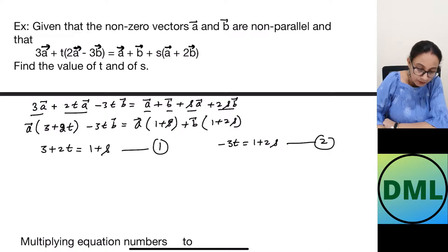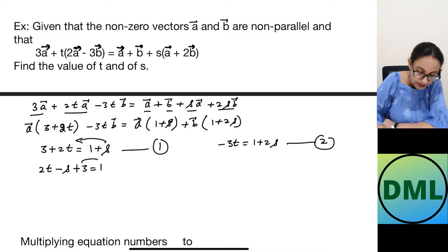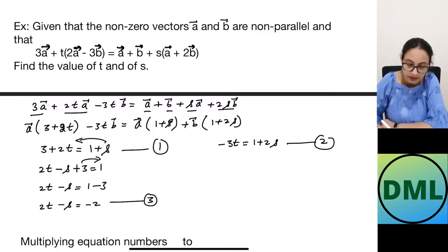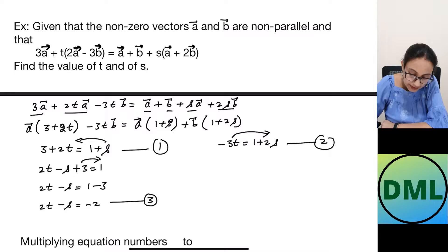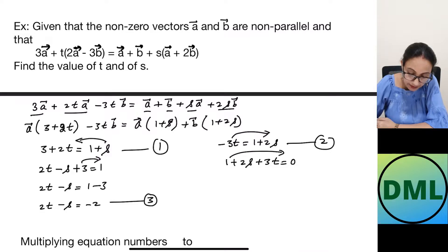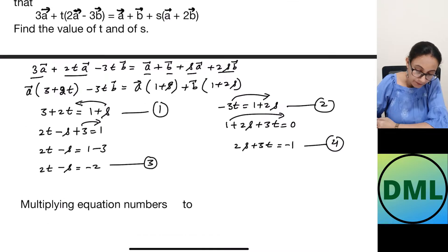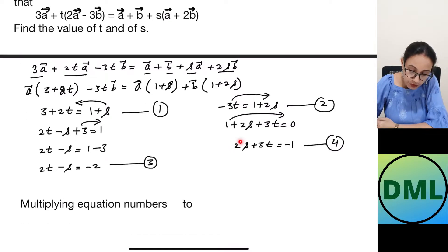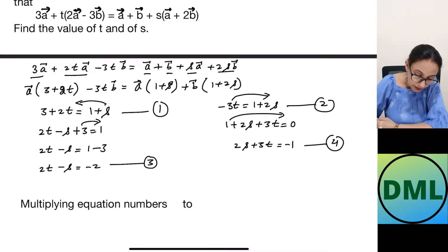Rearranging equation 1: move s to the left side to get 2t − s + 3 = 1, then 2t − s = −2 — this is equation 3. Rearranging equation 2: move −3t to the right to get 1 + 2s + 3t = 0, then 2s + 3t = −1 — this is equation 4. Since the coefficient of s is −1 in equation 3 and 2 in equation 4, we multiply equation 3 by 2.